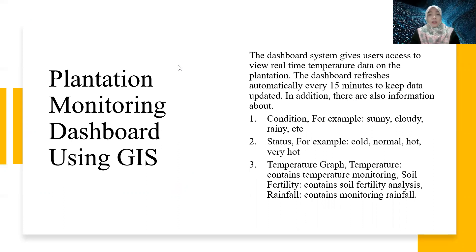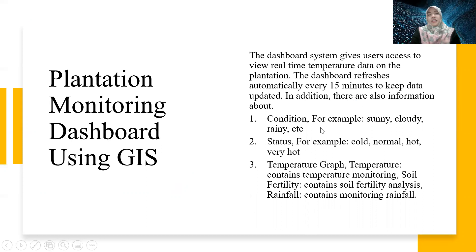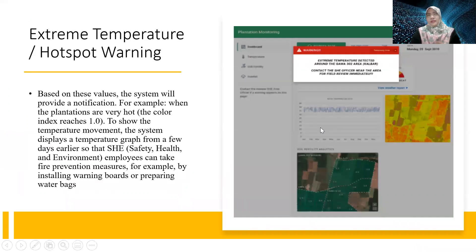In addition, there is information about weather conditions — for example, sunny, cloudy, or rainy — as well as temperature status such as normal, hot, or very hot, and a temperature gradient. The system provides notifications about hotspot warnings based on these values, for example, when the plantation temperature becomes very hot.